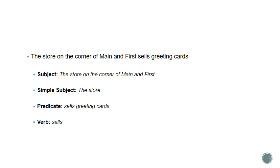Another example: 'The store on the corner of Main and First sells greeting cards.' The subject of this sentence is the store on the corner of Main and First — that's the whole subject. We could reduce it to its simple subject, which is just 'the store.' What is being said about the store is that it sells greeting cards — that's what is being predicated of it. And the verb that's part of that predicate is 'sells.'